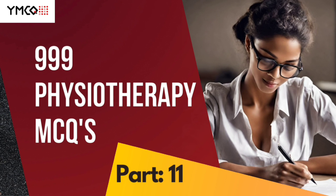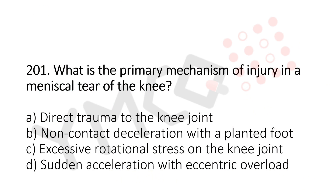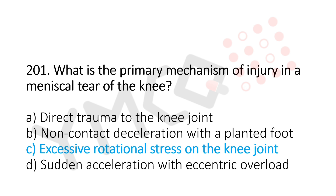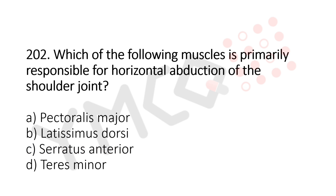Welcome to Part 11 of this series. Question 201: What is the primary mechanism of injury in a meniscal tear of the knee? Option A: direct trauma to the knee joint. Option B: non-contact deceleration with planted foot. Option C: excessive rotational stress on the knee joint. Option D: sudden acceleration with eccentric overload. The answer is option C, excessive rotational stress on the knee joint.